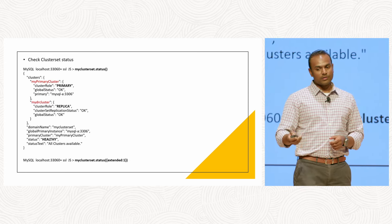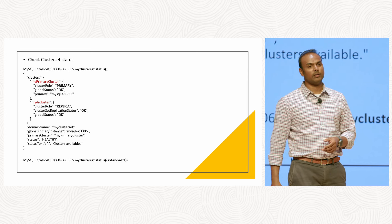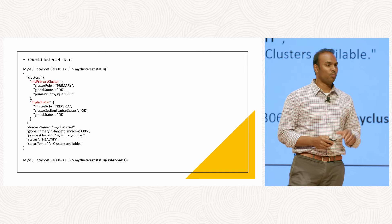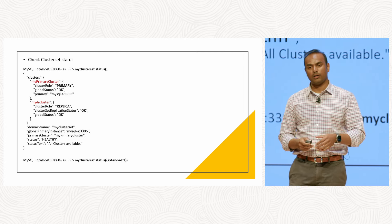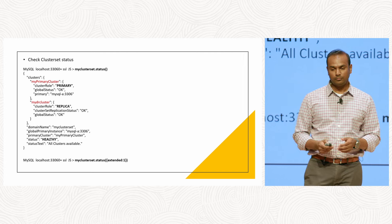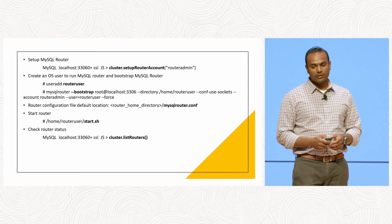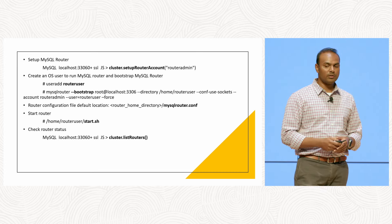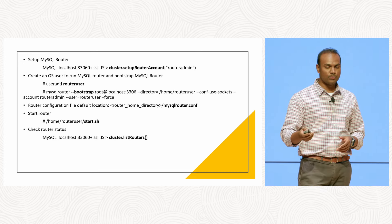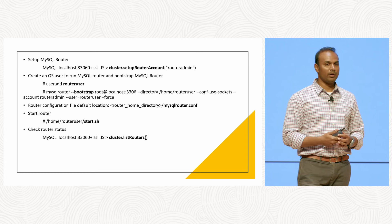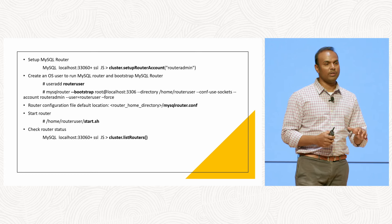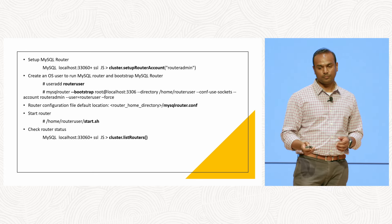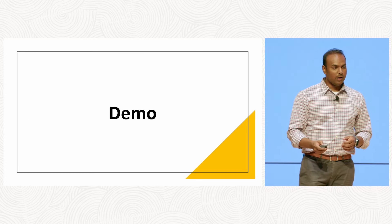The ClusterSet status shows you the status of your cluster set — which is your primary and which is your replica cluster. For the router, you set up a router admin account and bootstrap it, after which the router is always aware of everything happening within the cluster and ClusterSet configuration. With that, let's go through the demo and show a couple of scenarios.